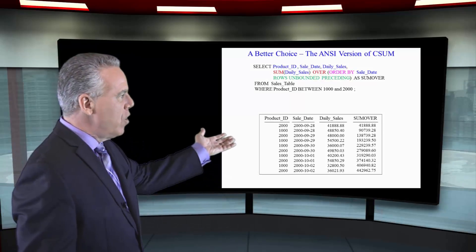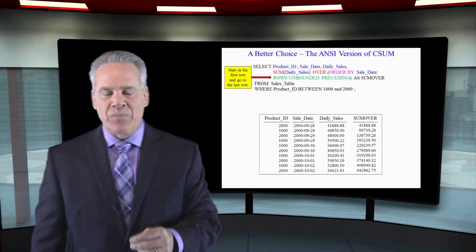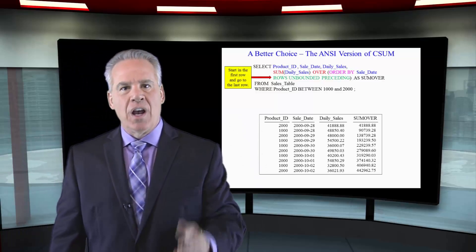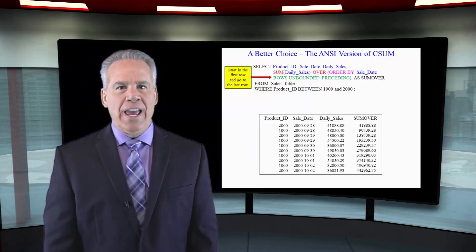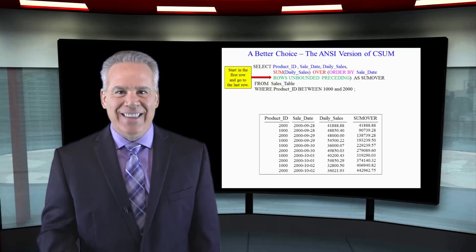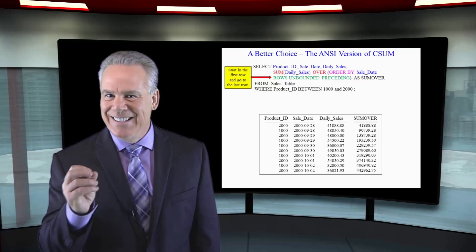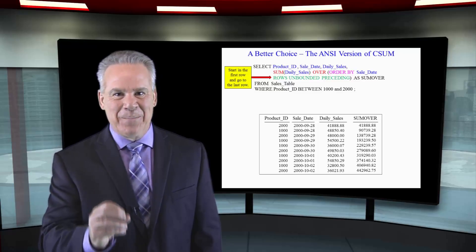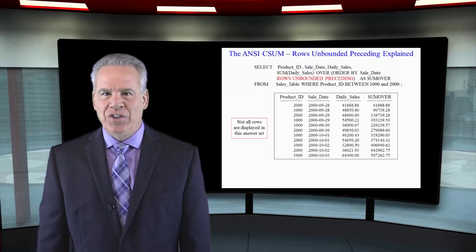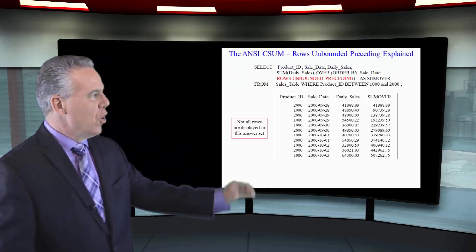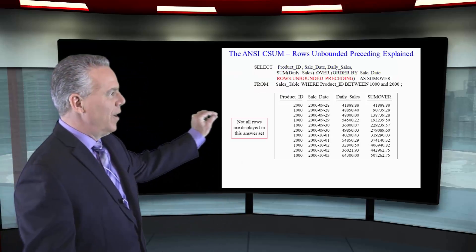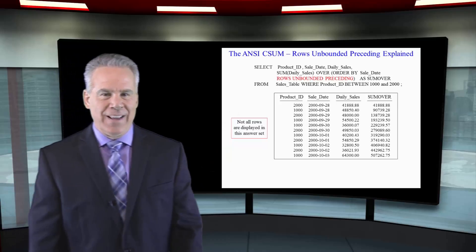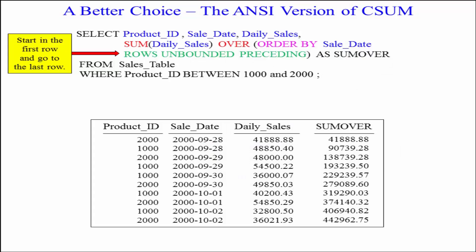When it sees ROWS UNBOUNDED PRECEDING, it says: I'm going to start with the first row and go to the end. And this is an ANSI CSUM. ROWS UNBOUNDED PRECEDING means start at the beginning and go to the end. You'll see that quite often in these ANSI ordered analytics.